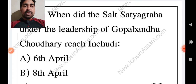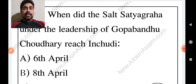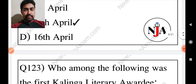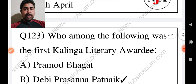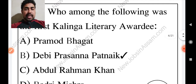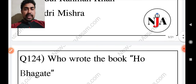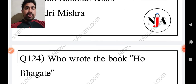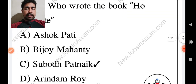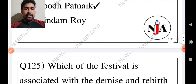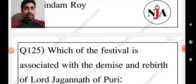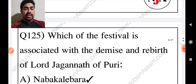The answer is the 12th April, under the leadership of Gopavandhu Choudhuri. Then which festival is associated with the demise and rebirth of Lord Jagannath in Puri?